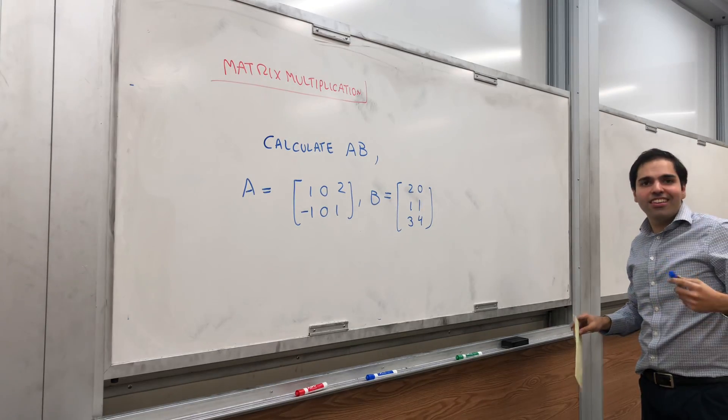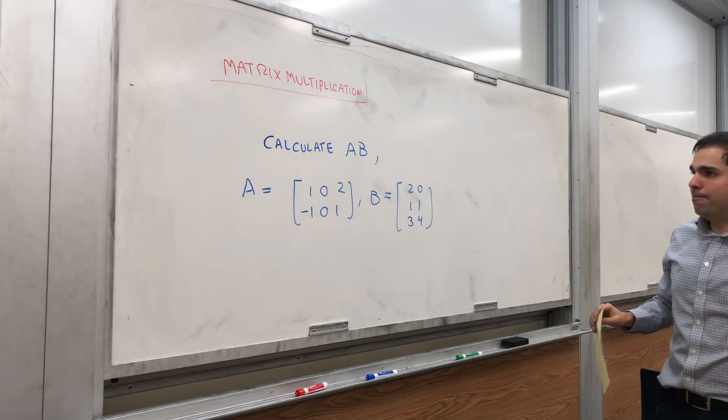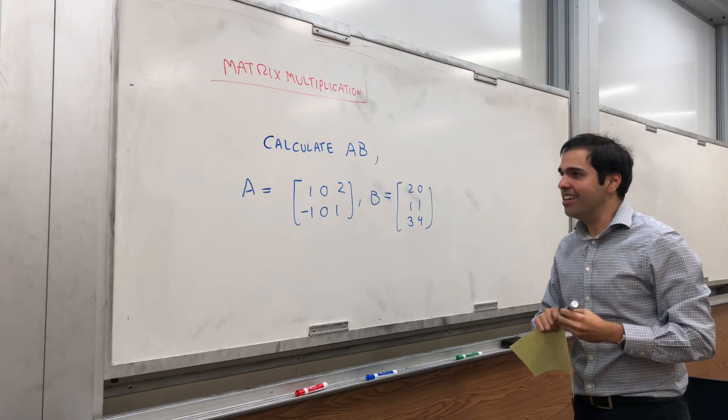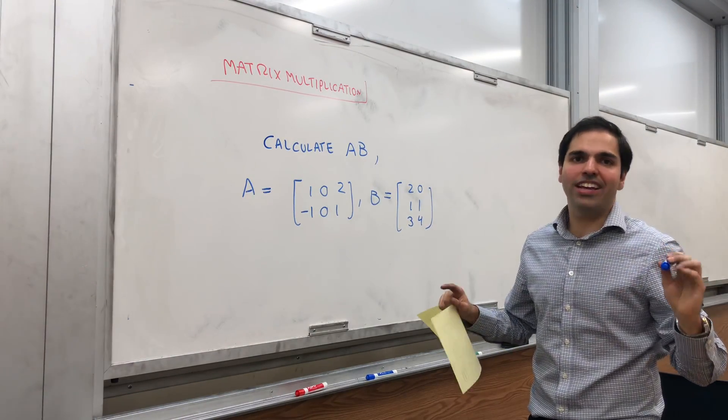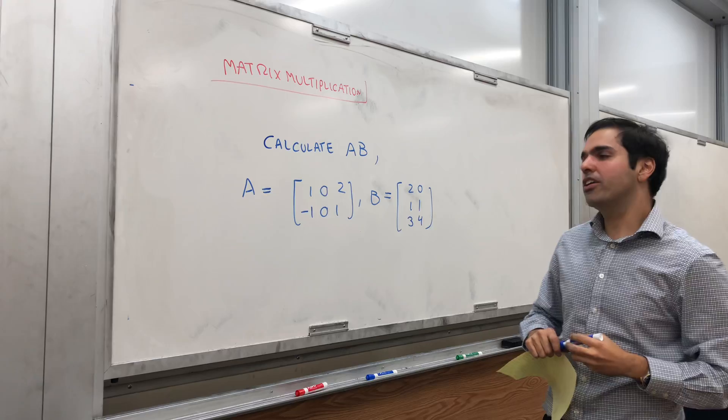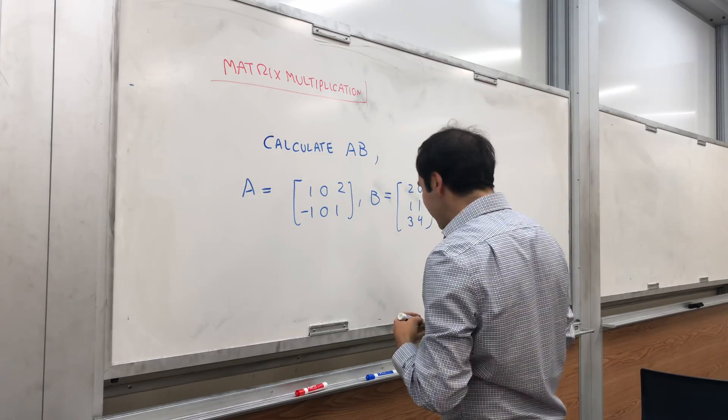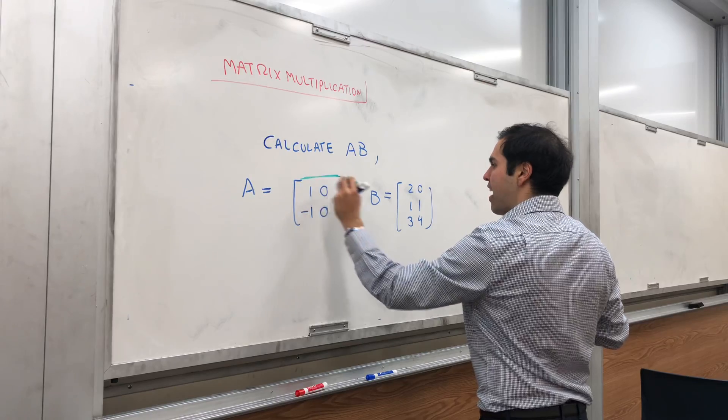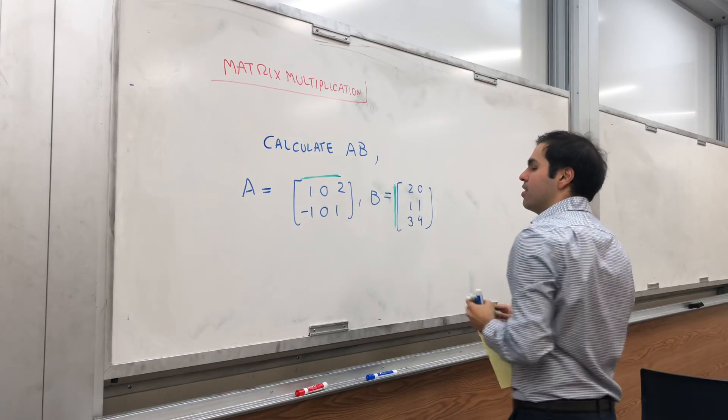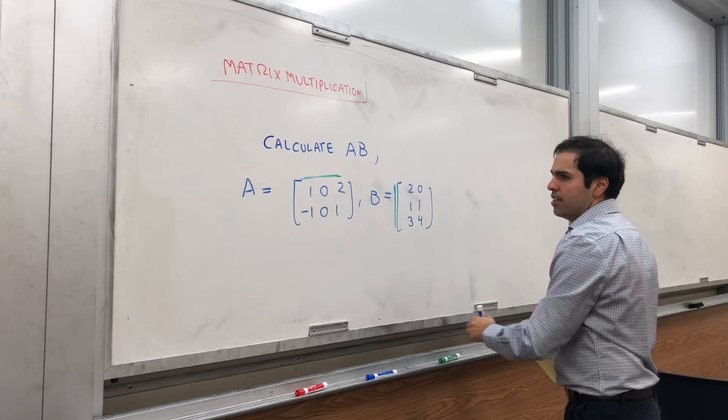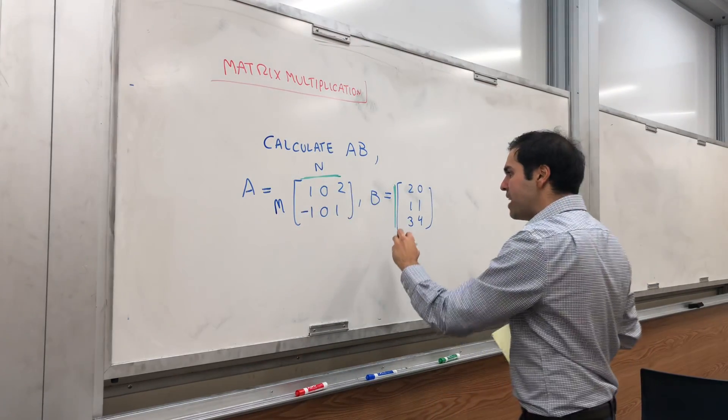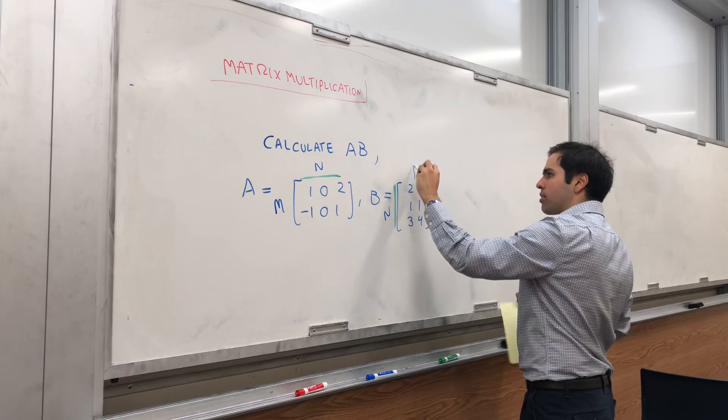Before you calculate AB you need to check one thing and you don't even actually need to check it because you'll see in a second it becomes kind of natural. You need to make sure that the number of columns of A equals the number of rows of B. So if A is n by n then B needs to be n by something.